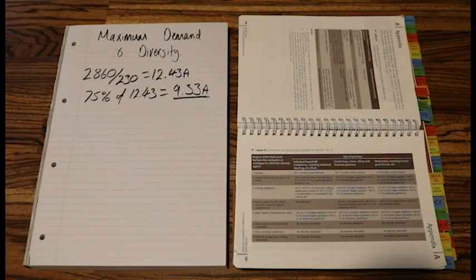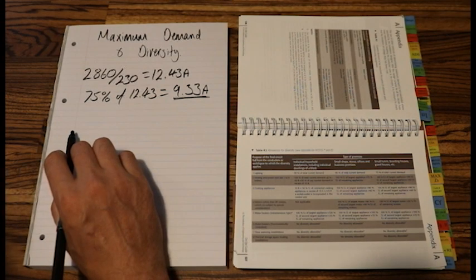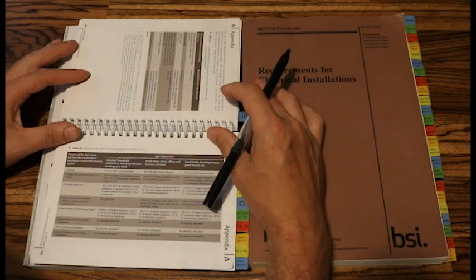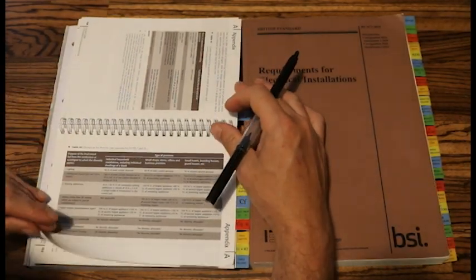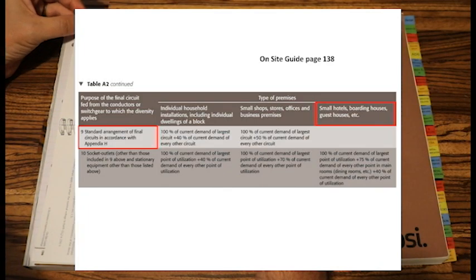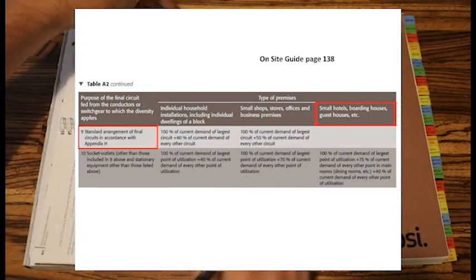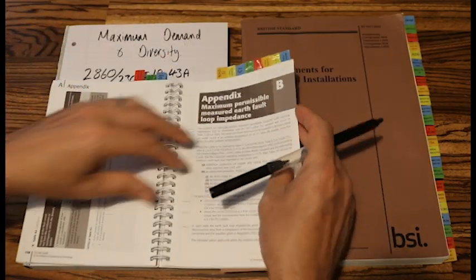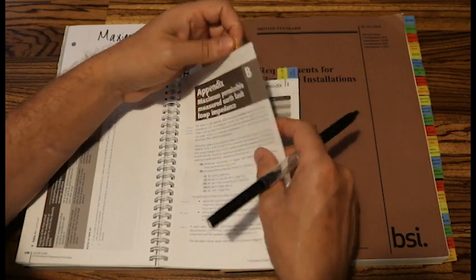The next one was three final ring circuits, 32 amp each. That is on page 138, row 9. It's a standard arrangement of final circuits in accordance with appendix H. If you are unsure about what that is, appendix H, let's have a quick look.